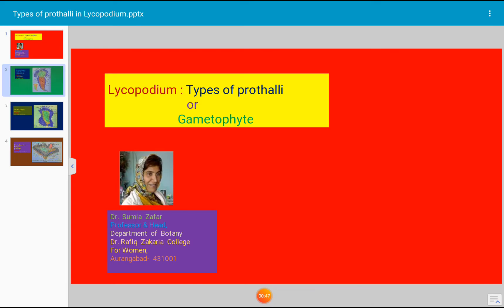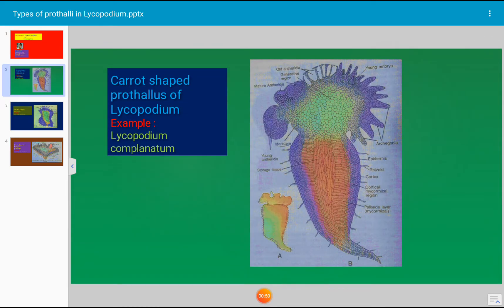First is the carrot-shaped prothallus. This carrot-shaped prothallus occurs in Lycopodium complanatum and the prothalli are of various shapes and shades - brownish, yellowish, or colorless. The prothallus or gametophyte looks like a carrot and is saprophytic in nature, found underground at various depths from one to eight centimeters.